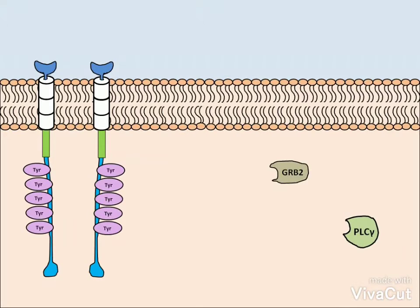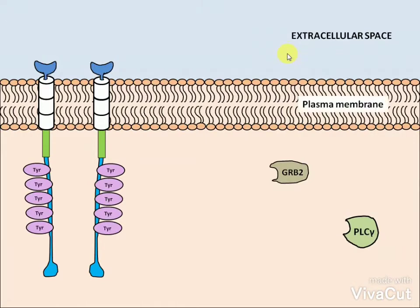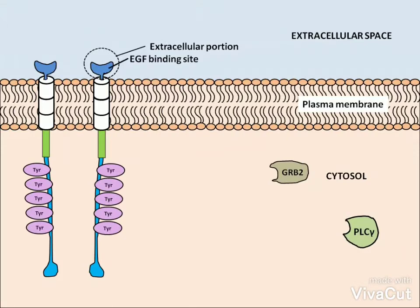Let us discuss the structure of receptor tyrosine kinase, or RTKs. The receptor for epidermal growth factor, or EGF, is a typical receptor tyrosine kinase. This receptor spans from extracellular space, through the plasma membrane, and into the cytosol. The extracellular portion of the receptor is present in the extracellular space and contains an EGF binding site.